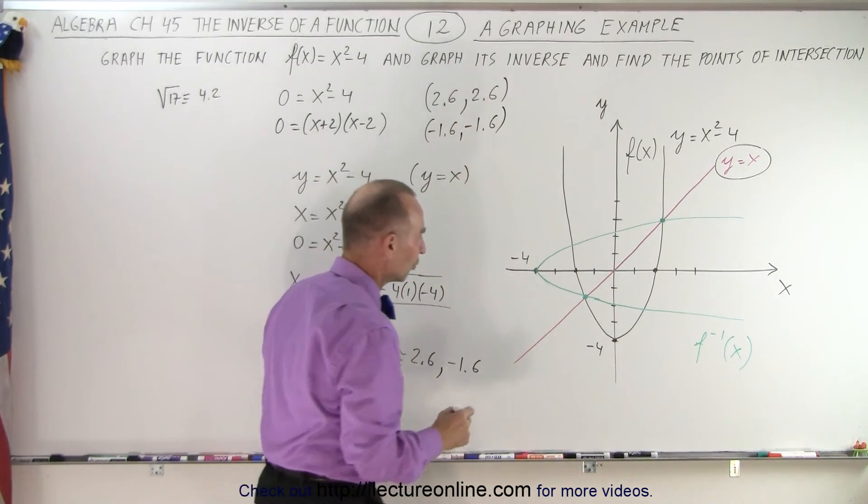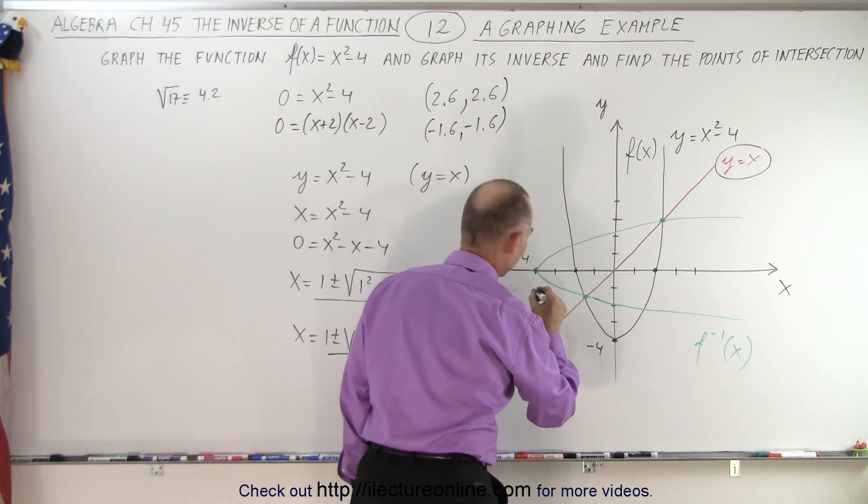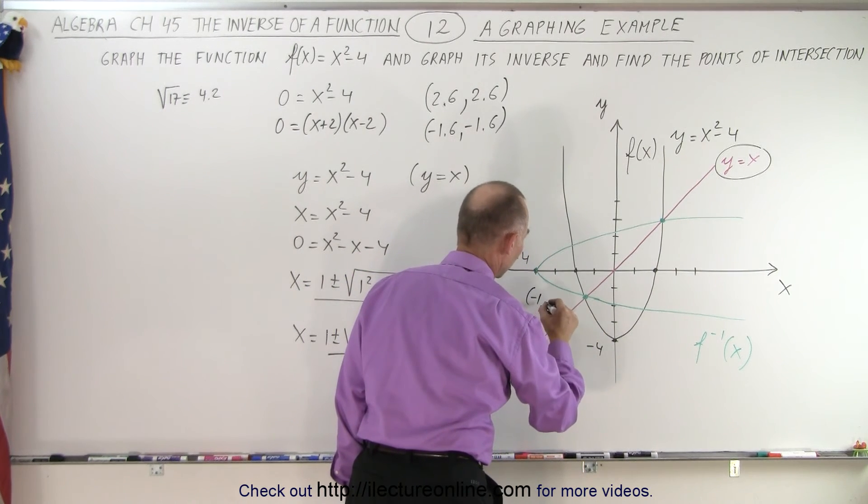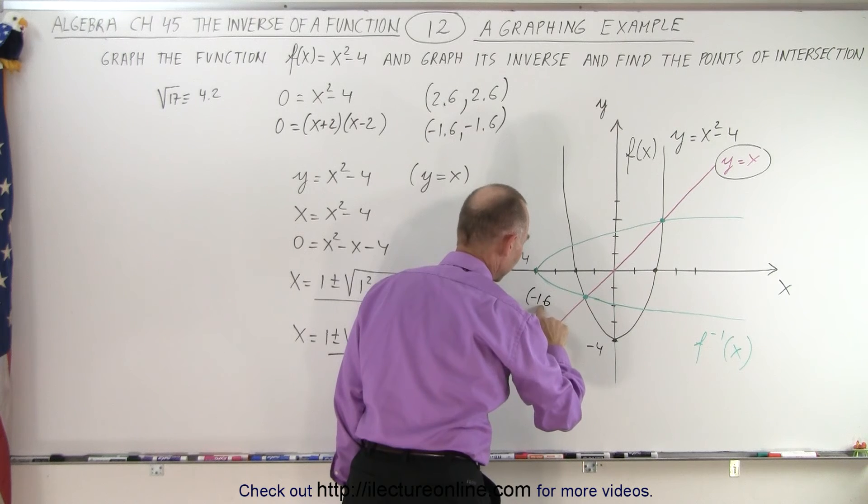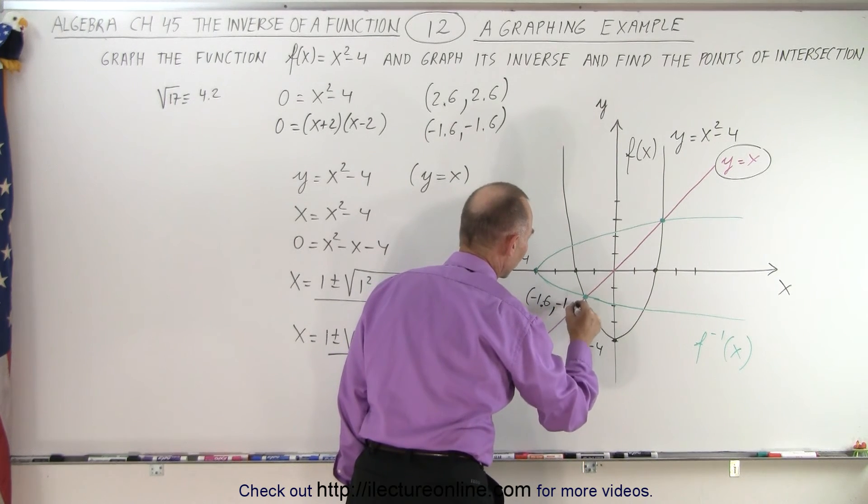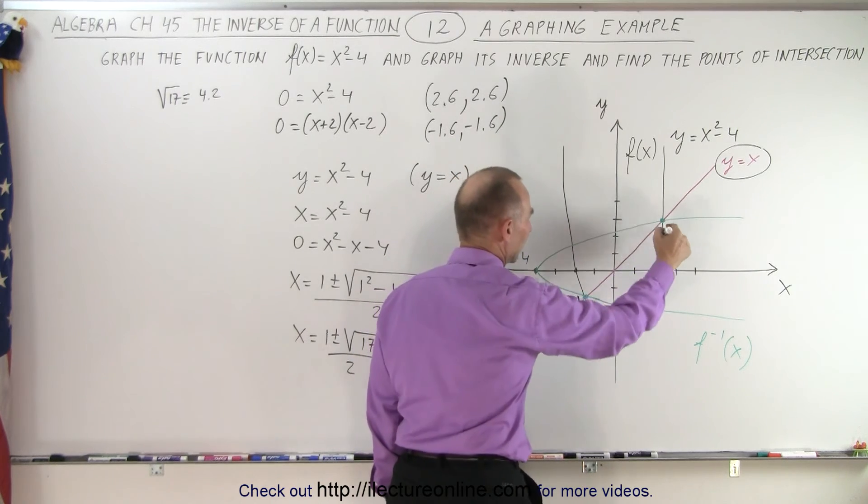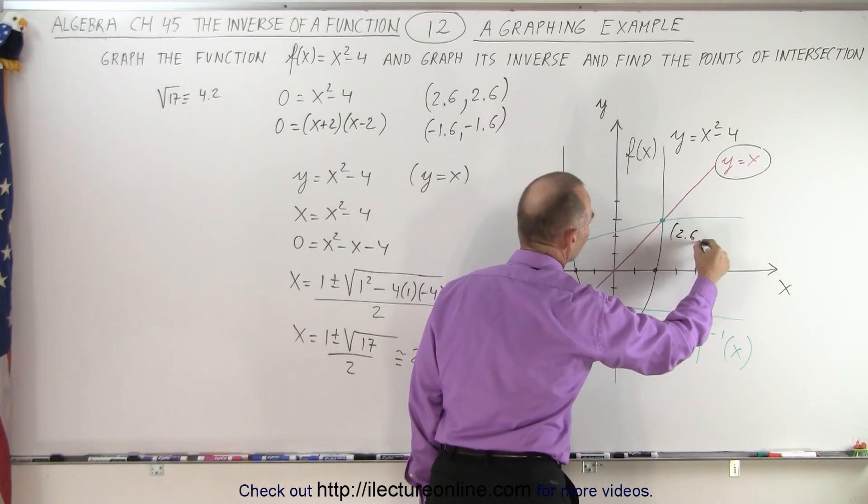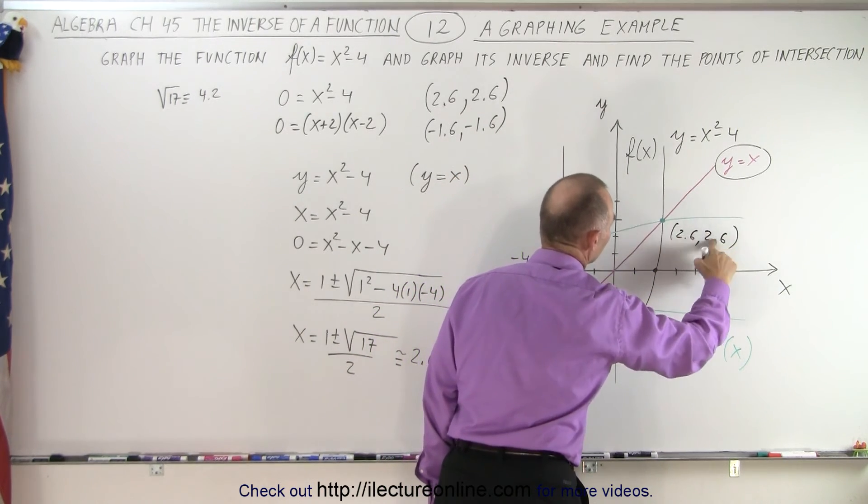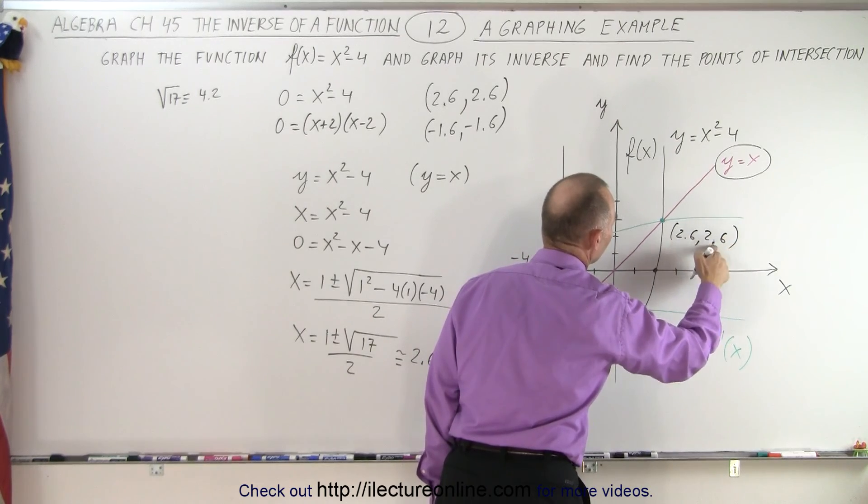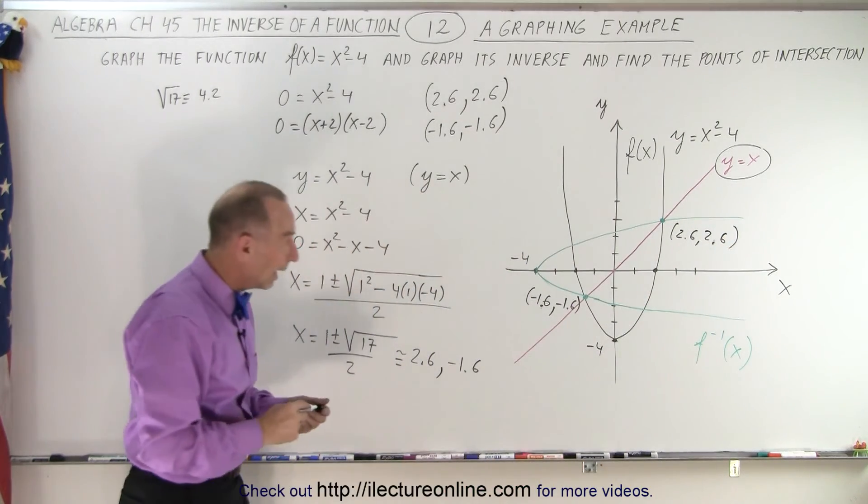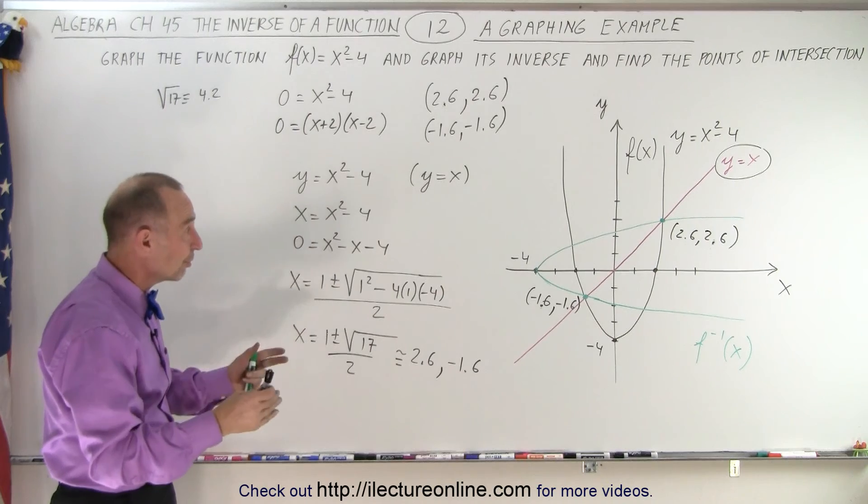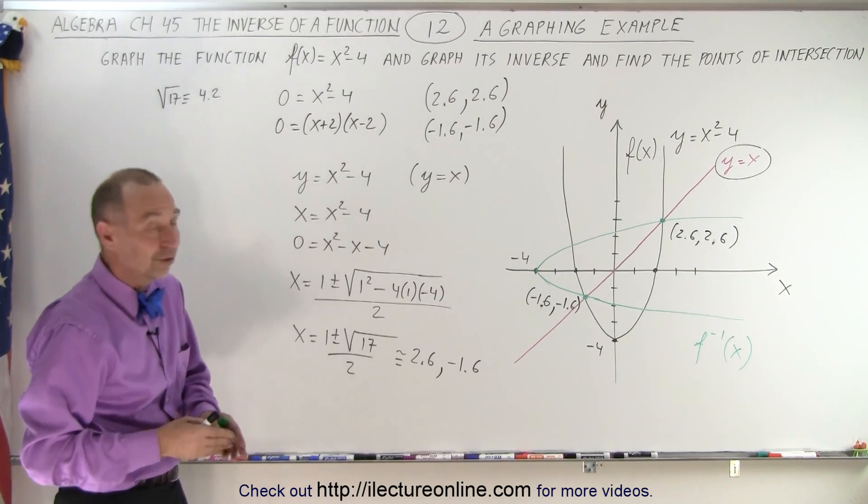Can we find those two points? Sure enough, there's our first point right there. It would be minus 1.6, minus 1.6 like that. That's one of them. And over here, that would be the point 2.6, 2.6. That's a decimal point. Too many curves there. There we go. And that is how we find the two points of intersection between the function and its inverse.